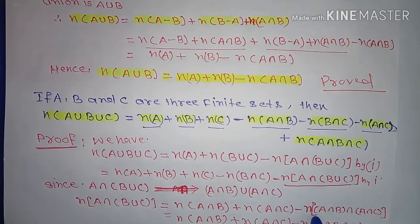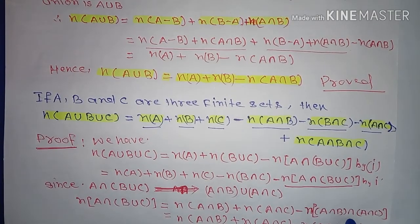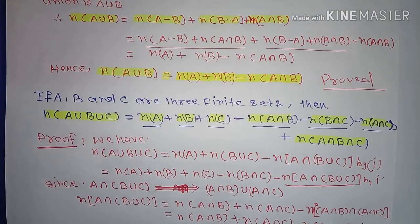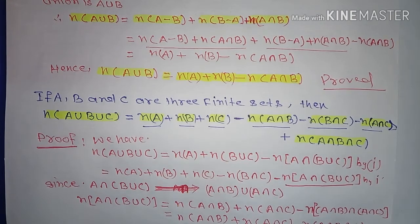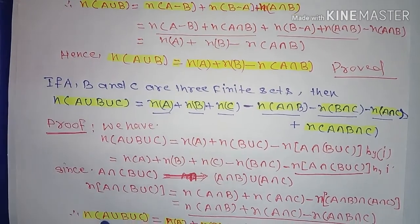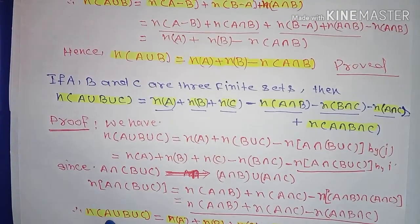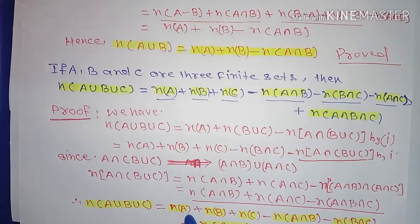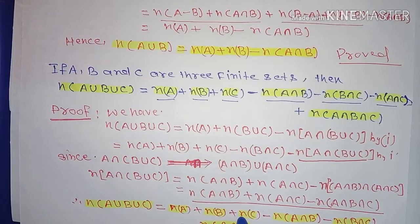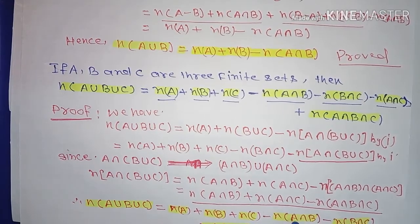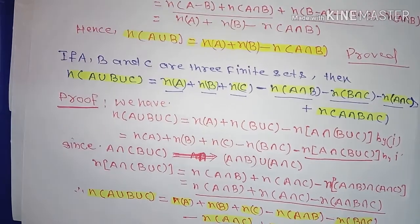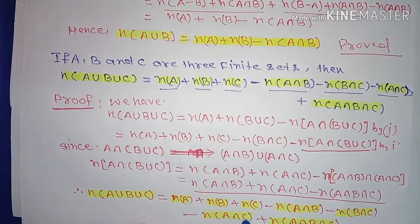Therefore, n(A union B union C) is equal to n(A) plus n(B) plus n(C) minus n(A intersection B) minus n(B intersection C) minus n(A intersection C) plus n(A intersection B intersection C). In this way it is proved.